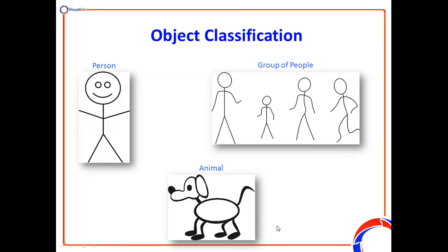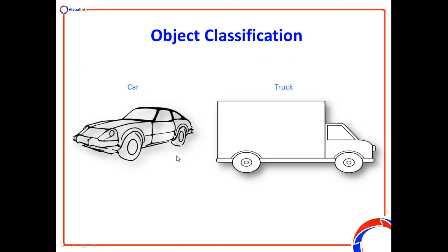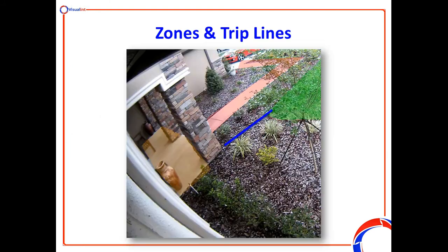There are various object classifications. Obviously people is the key thing, but people, animals, cars, and trucks can all be identified within the algorithm of the cameras, and then various events and rules can be configured accordingly.